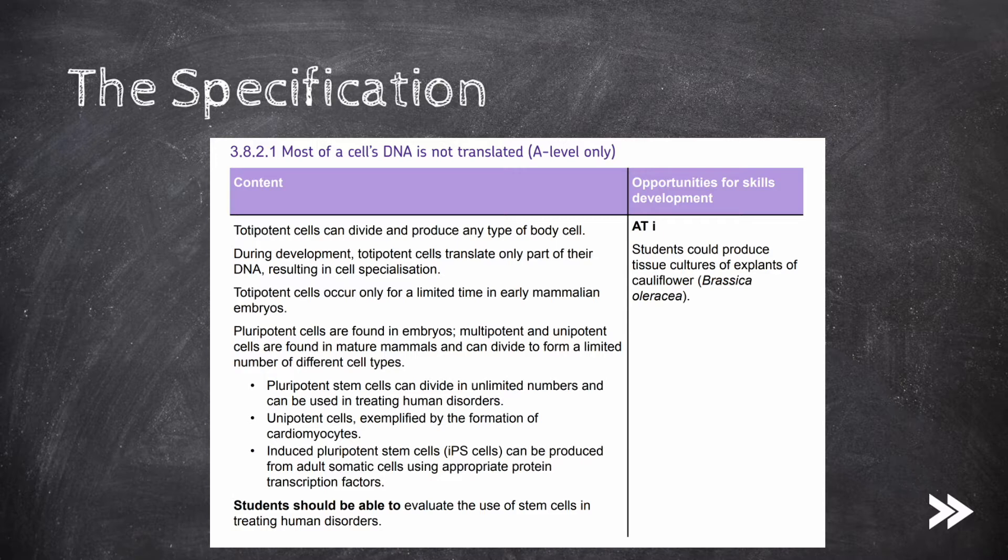Then we will cover pluripotent cells, as well as multipotent and unipotent cells. Pluripotent stem cells can divide in unlimited numbers and can be used in treating human disorders. We should also know about the formation of unipotent cardiomyocytes.